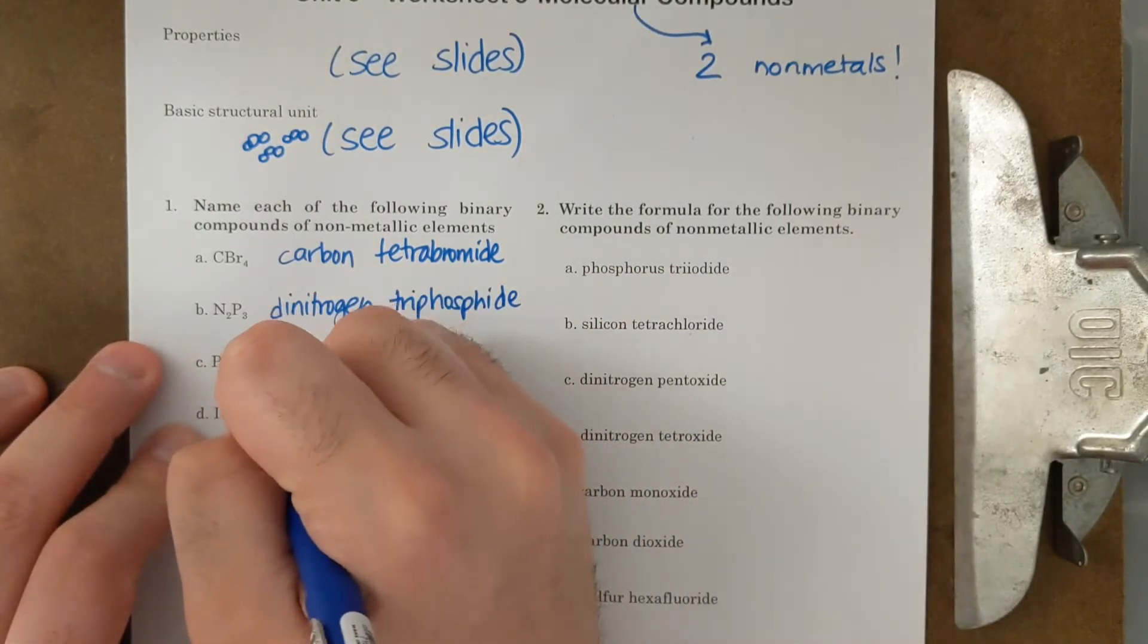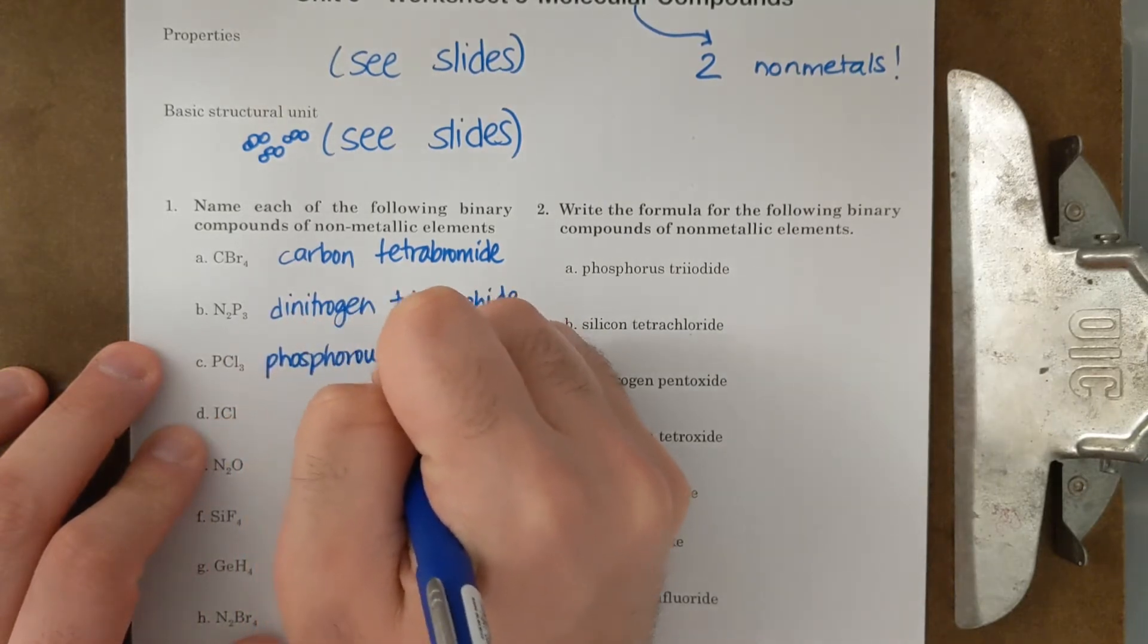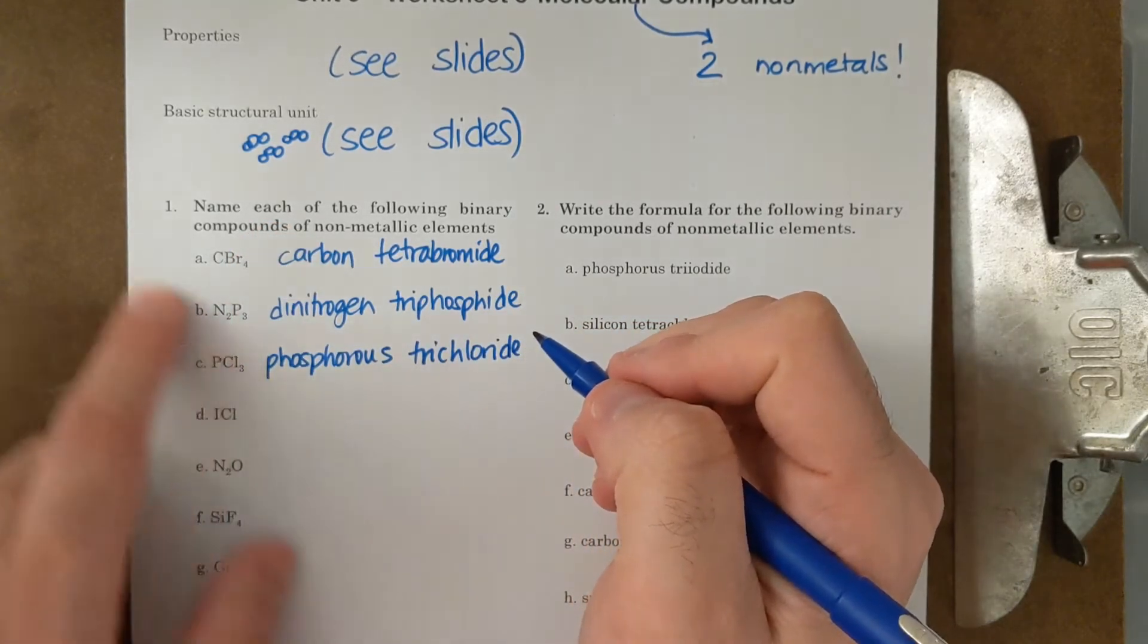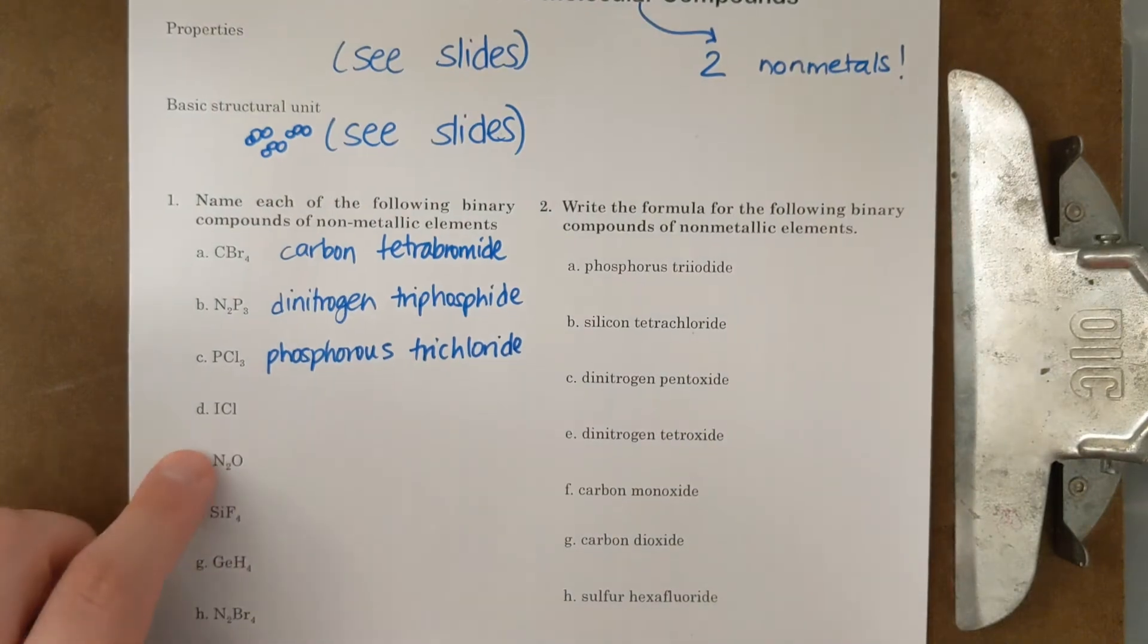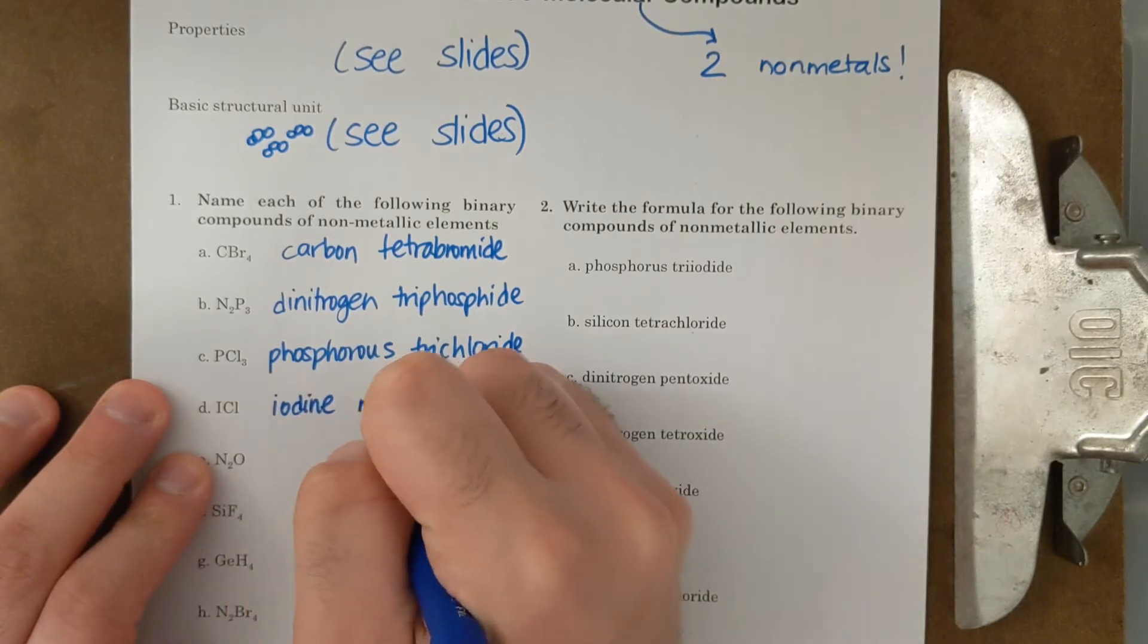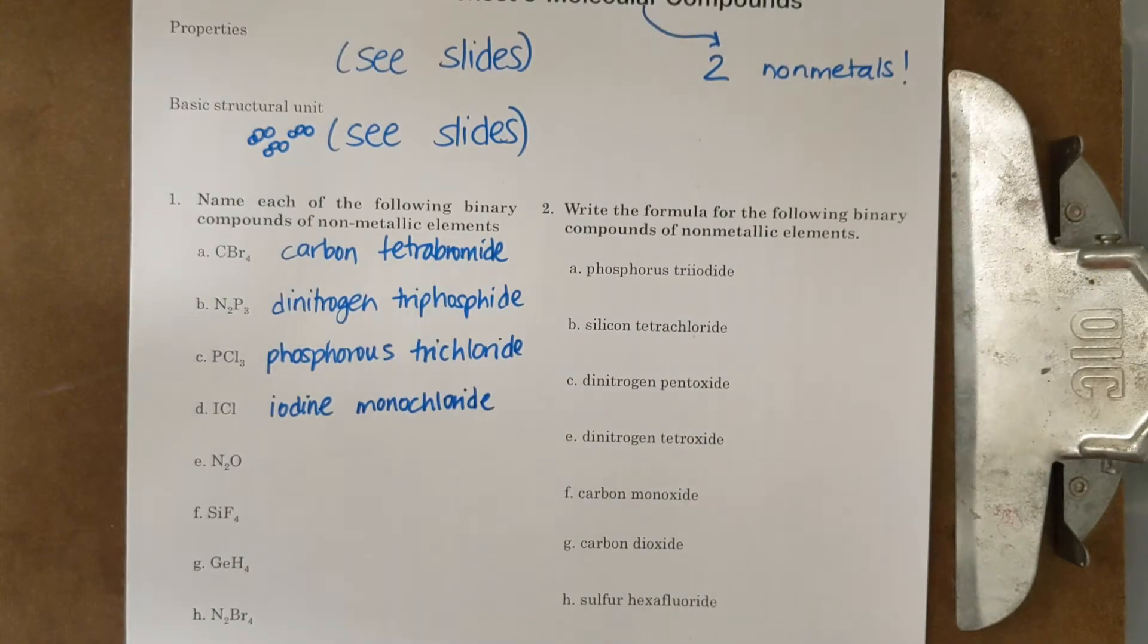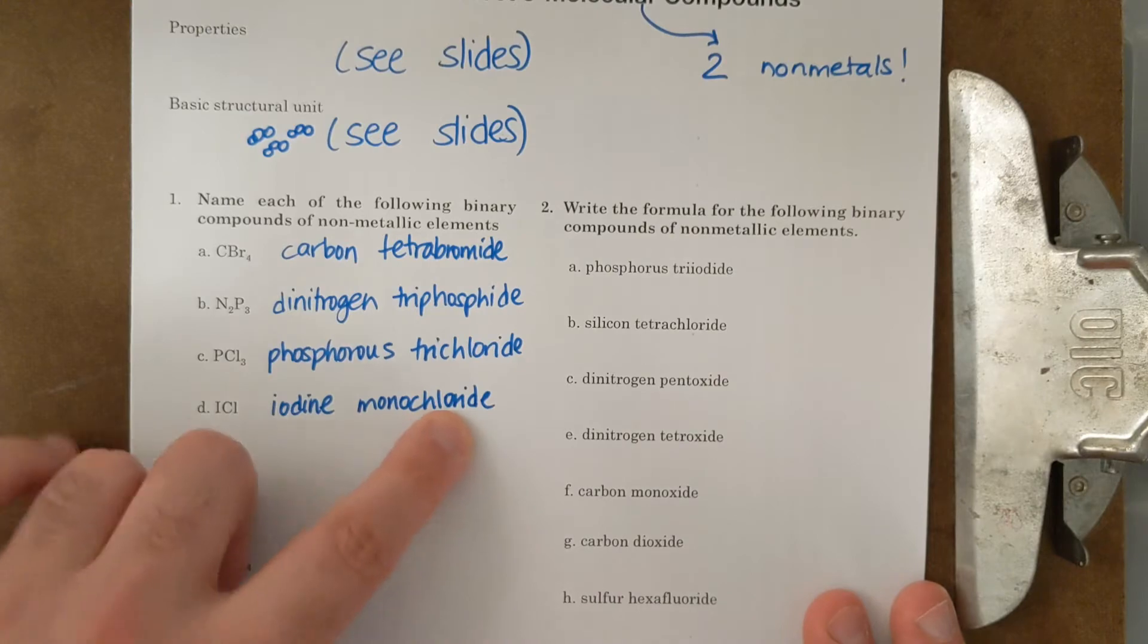PCl3 is going to be phosphorus trichloride. Notice how we don't put the mono on the first element if there's one of them. You don't have to do that. Mono is for the second element. So look at letter D. D is going to be iodine monochloride. I can't just say iodine chloride because I could have 50 things that are iodine chloride. So mono means one. Monochloride means one chlorine.